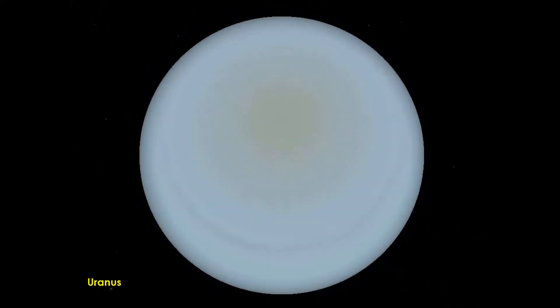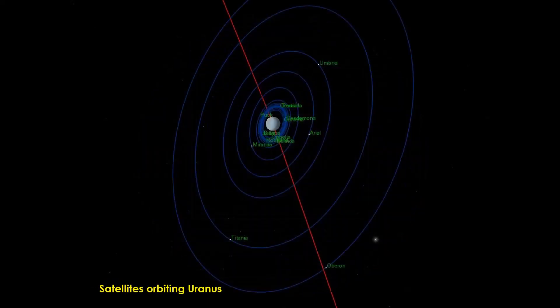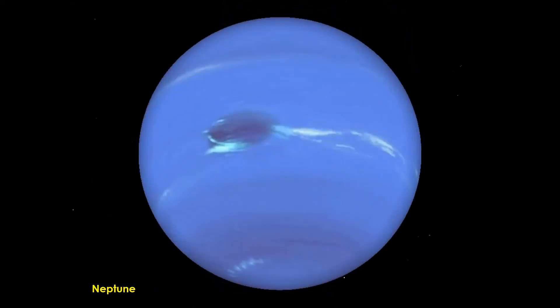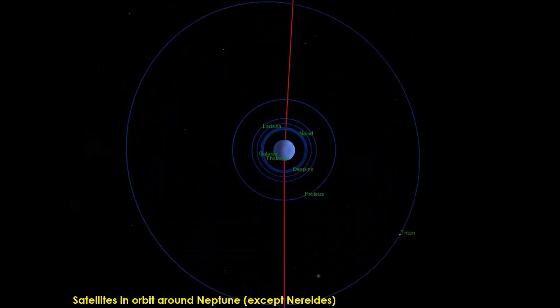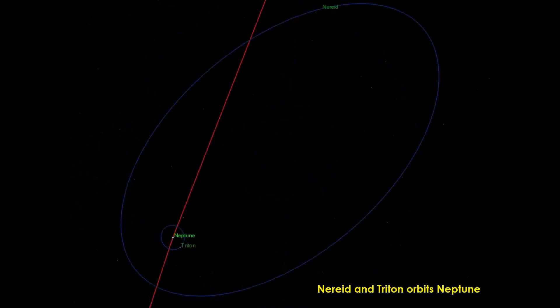This is Uranus and the satellites orbiting Uranus. Now we have Neptune and Neptune with its satellites. These are Nereid and Triton, which orbit Neptune.